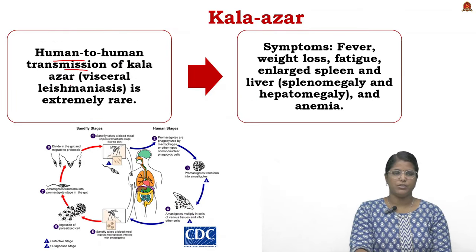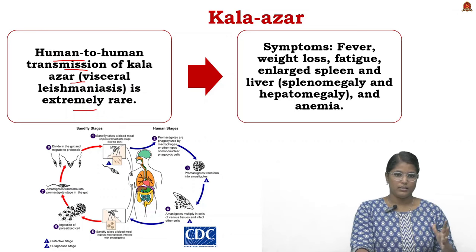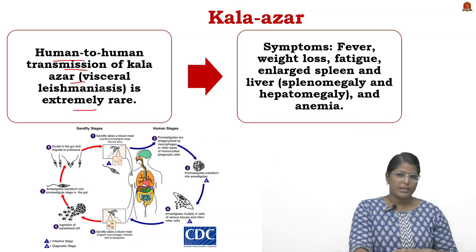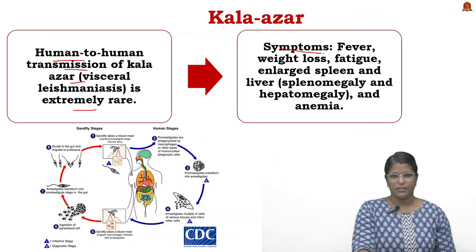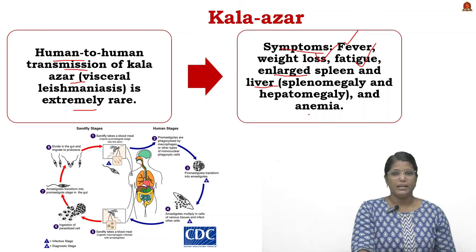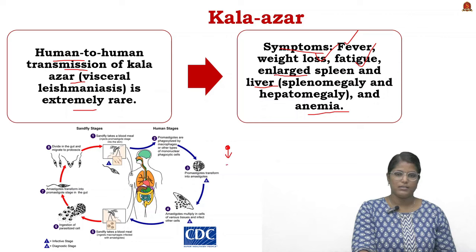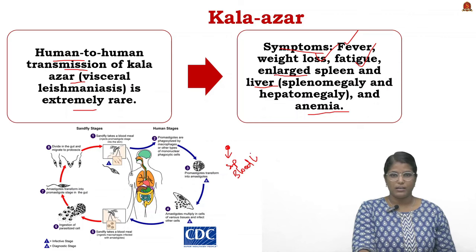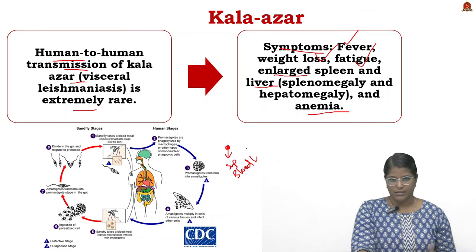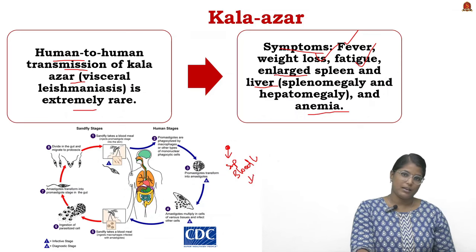Human-to-human transmission of Kala Azar is very rare — it cannot be transmitted through touch or blood transfusion; cases exist but are extremely rare. Symptoms include fever, weight loss, fatigue, enlarged spleen and liver, and anemia. When the protozoan enters the body it suppresses the immune system and affects blood cells, leading to organ failure and enlargement of organs. If left untreated, it can lead to death.